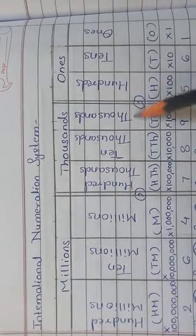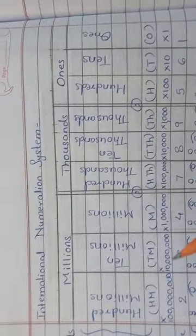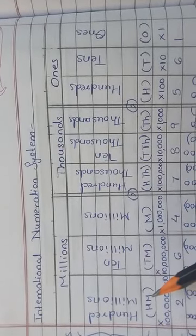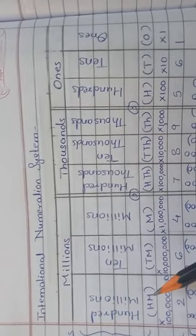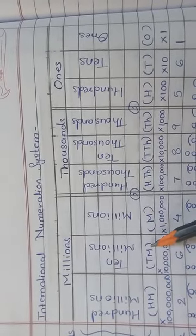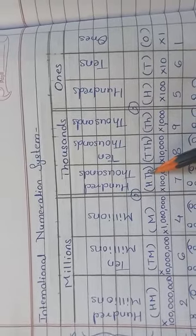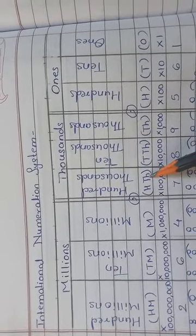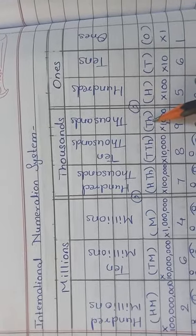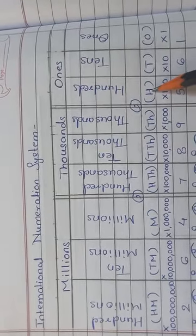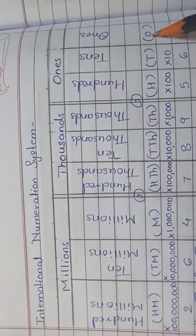You can see commas between the two periods. The short forms are: HM for hundred millions, TM for ten millions, M for millions, HTH for hundred thousands, TTH for ten thousands, TH for thousands, H for hundreds, T for tens, and O for ones.